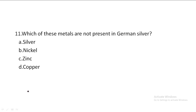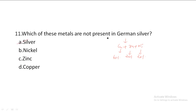Next one: Which of these metals is not present in German silver? German silver is composed of Copper plus Zinc plus Nickel — Copper 60%, Zinc 20%, Nickel 20%. Option A: Silver, Option B: Nickel, Option C: Zinc, Option D: Copper. Since German silver contains no actual silver, Option A, Silver, is the correct answer.